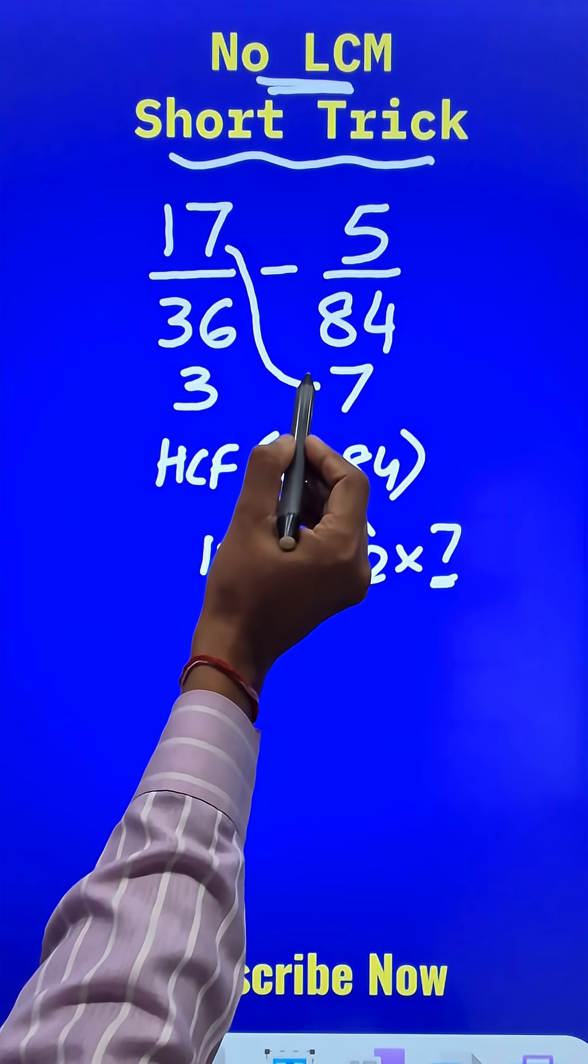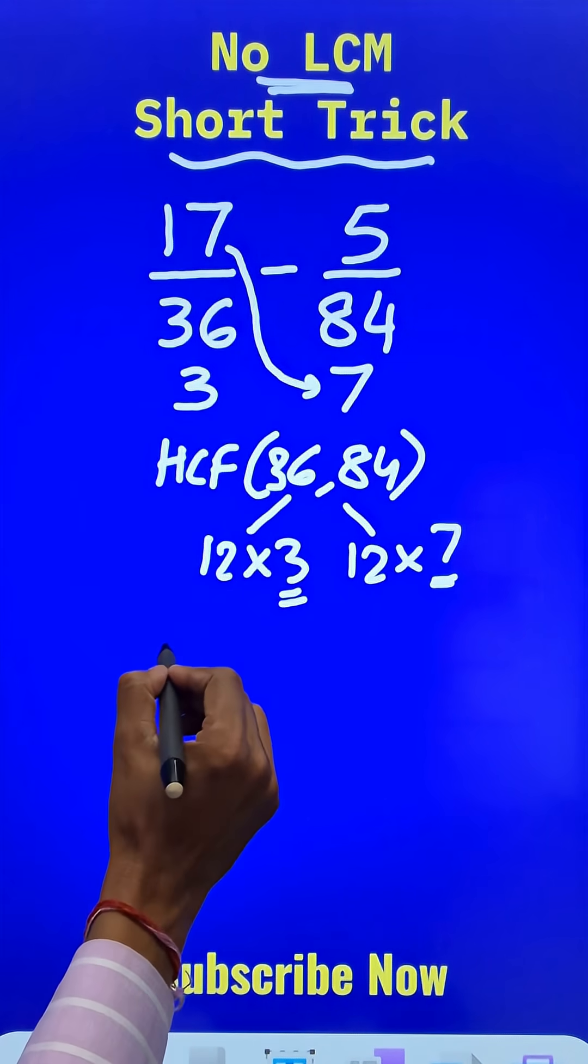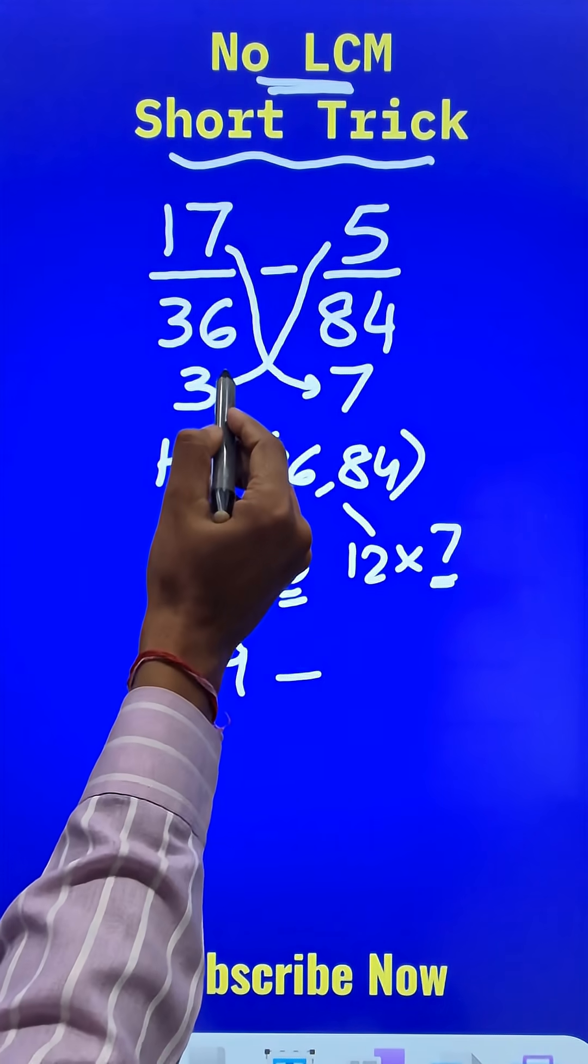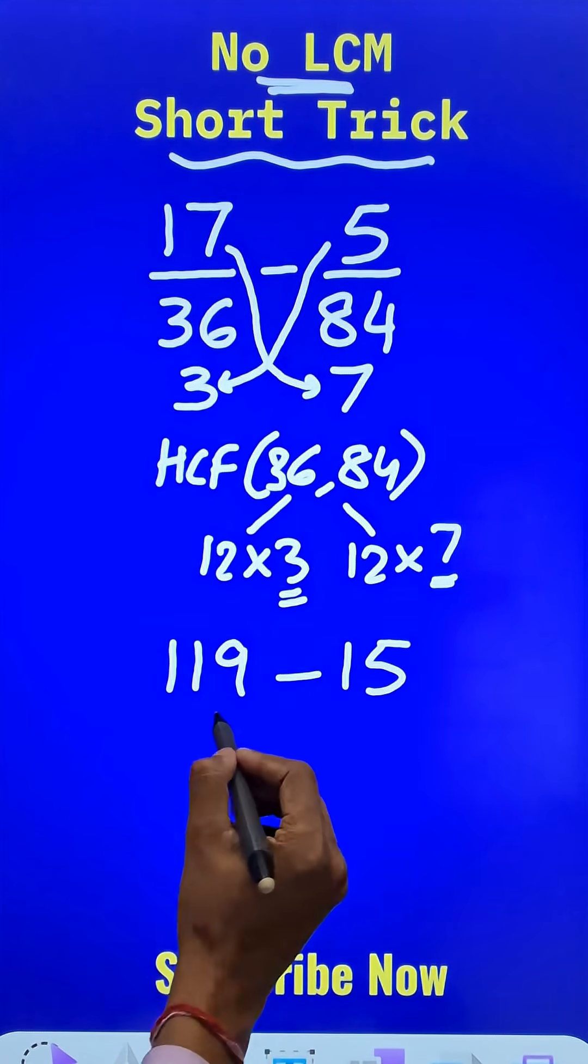Just multiply 17 by this number, 17 into 7, that will give you 119 and then subtract what? 5 times this number 3, that is 15. And in the denominator,